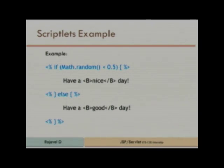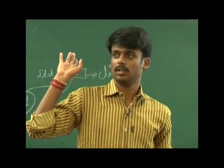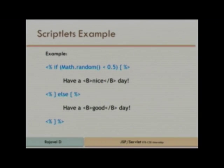In scriptlet I am combining Java code with HTML code. I am taking a random number using Math.random(). If the random number is less than 0.5, I print 'Have a nice day', else I print 'Have a good day'. In declaration, I declare a variable 'accessCount' as an integer. In scriptlet you can only declare variables, but in declaration you can declare methods as well.